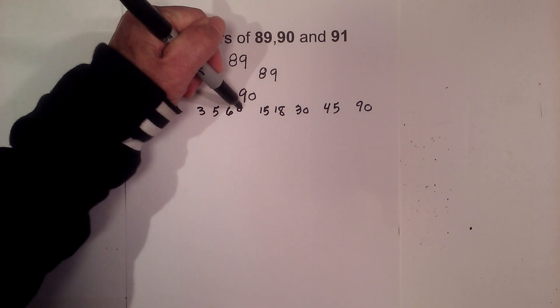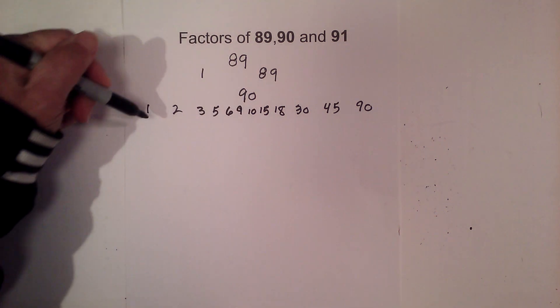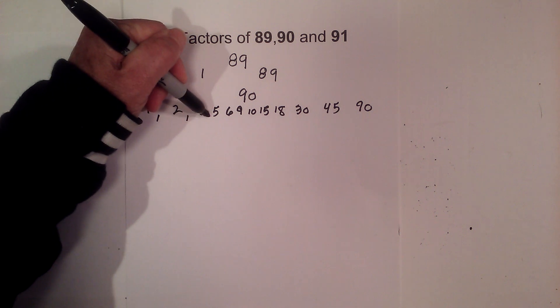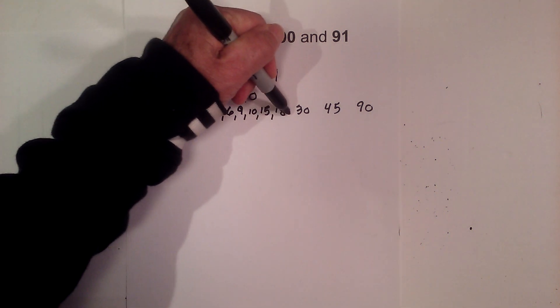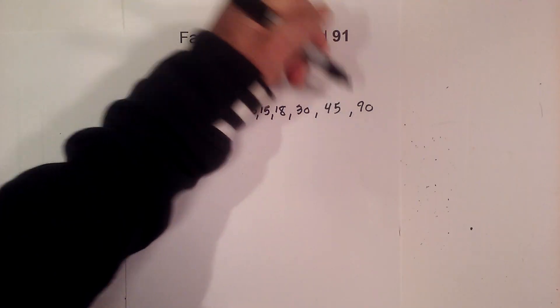So your factors are 1, 2, 3, 5, 6, 9, 10, 15, 18, 30, and 45.